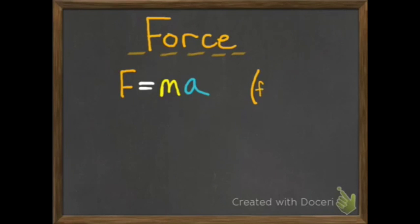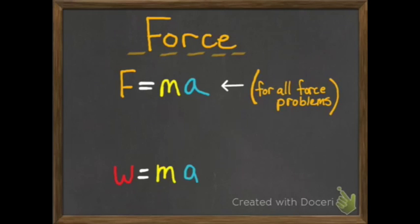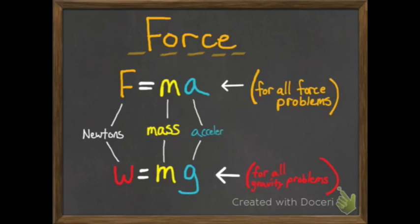Remember, we've talked about force, and we talked about two equations that we could use for force problems. That was F equals MA, which is force is equal to mass times acceleration, and W equals MG, where W is equal to your weight, M is your mass, and G is your acceleration due to gravity. Force and weight are measured in newtons, mass is measured in kilograms, and acceleration is measured in meters per second squared.